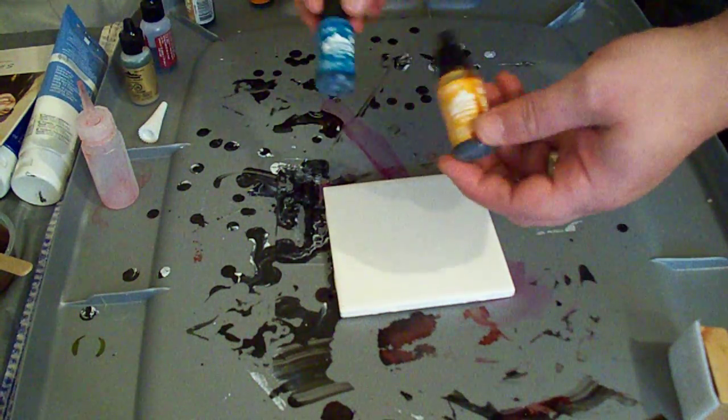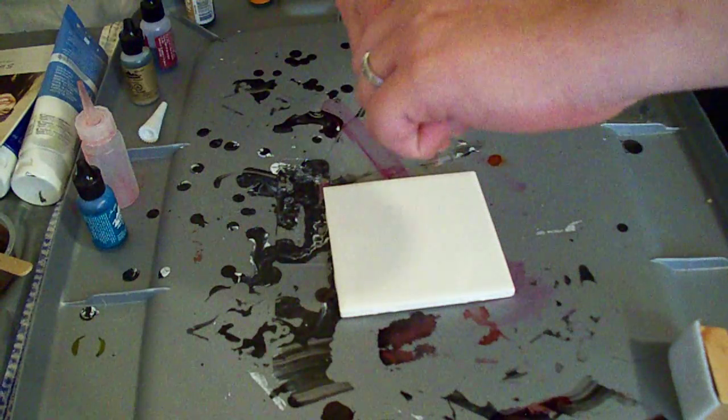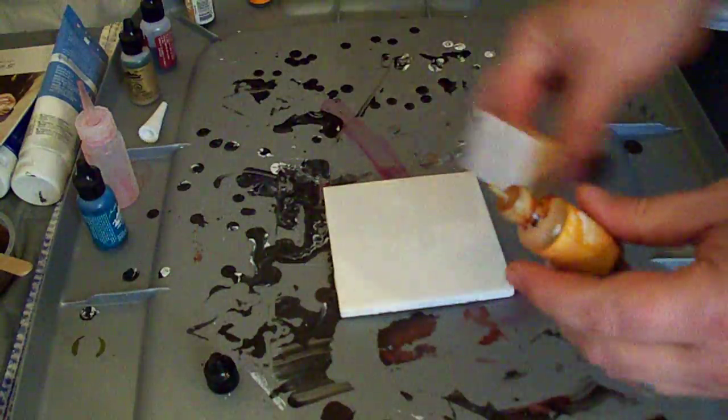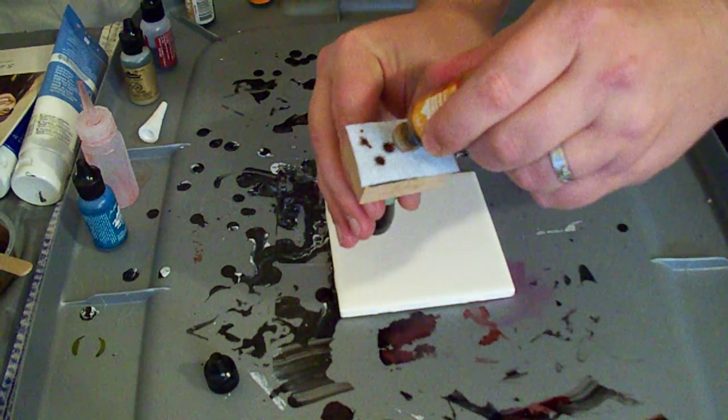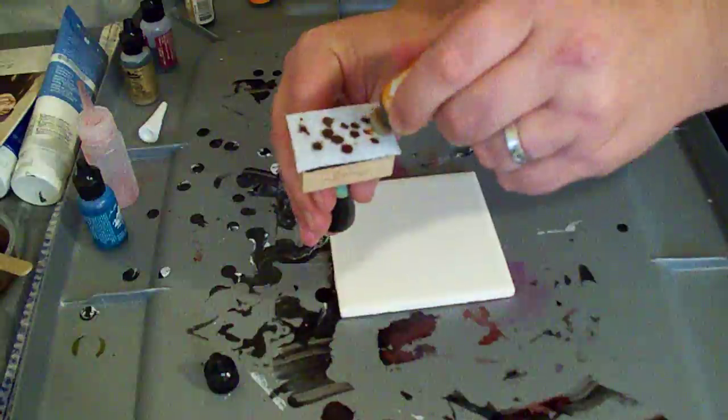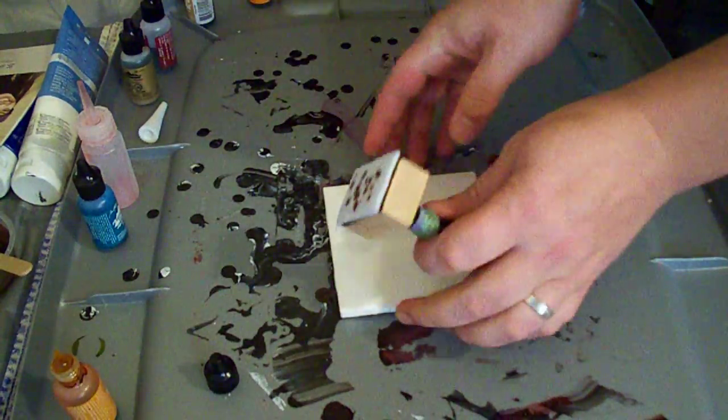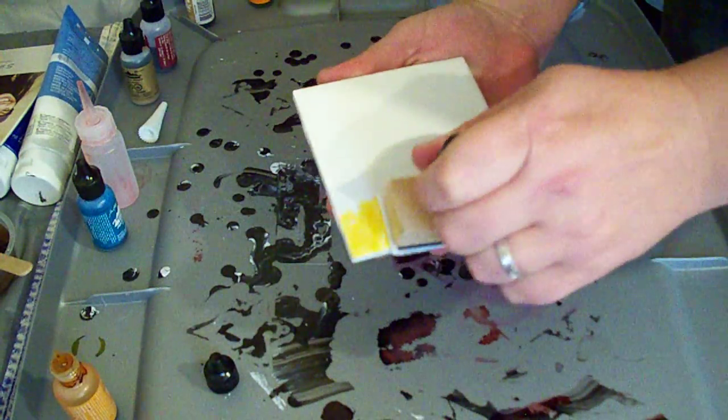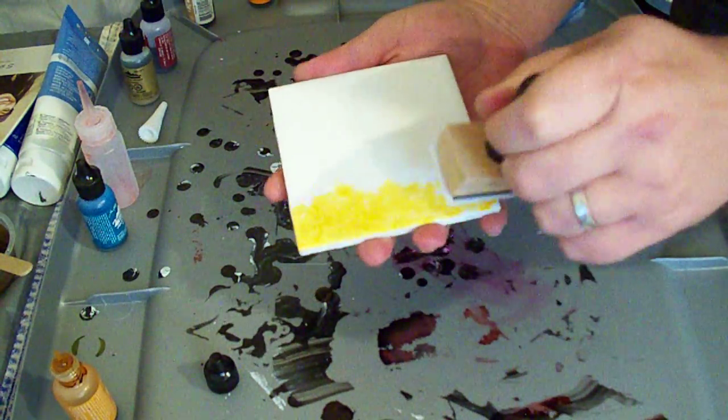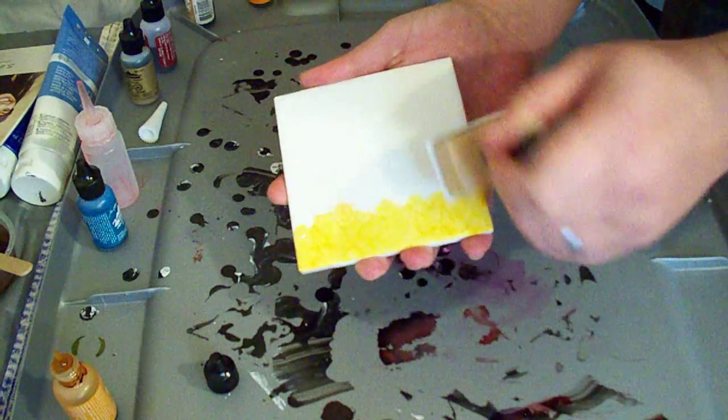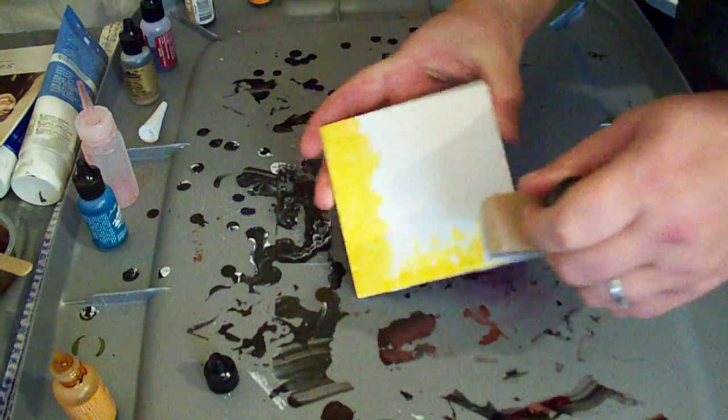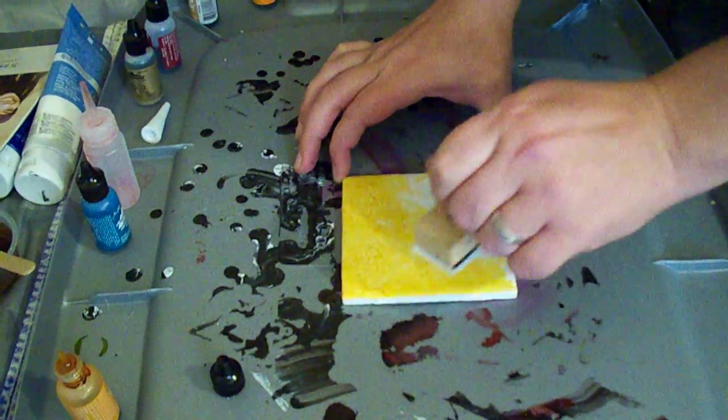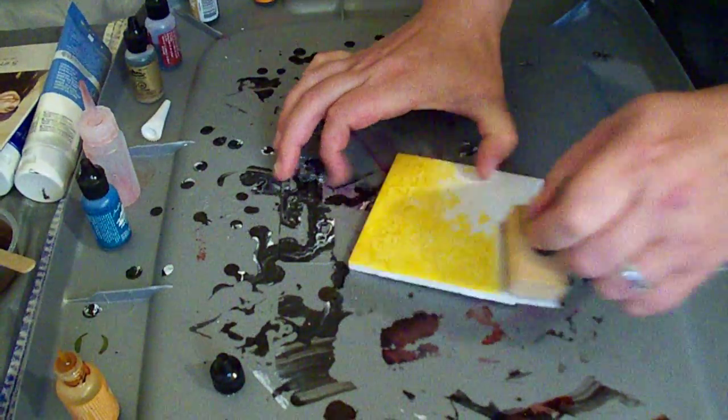I'm going to start here by putting some dots on my felt applicator and just go in and basically get a solid, pretty solid color in the background.